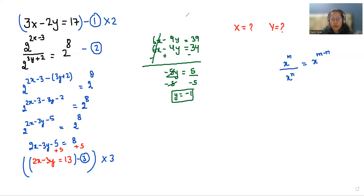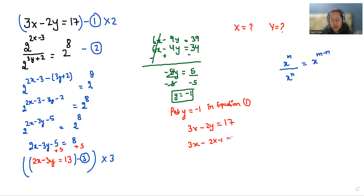Now I'm going to substitute the value of y in equation number 1. Put y is equal to minus 1. So 3x minus 2 times minus 1 is equal to 17. So 3x plus 2 is equal to 17. Now I'm going to subtract 2 from both sides, so it becomes 3x is equal to 15. Now I'm going to divide both sides by 3, so x is equal to 5.